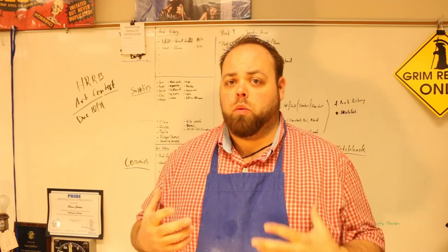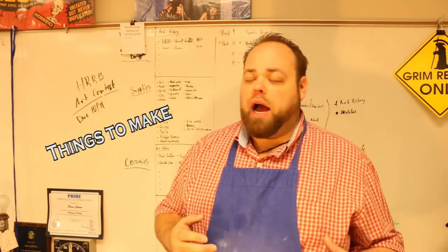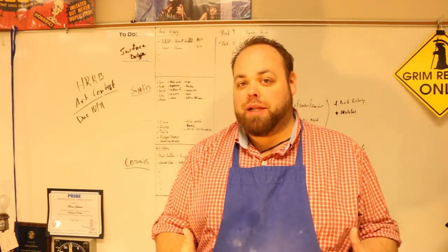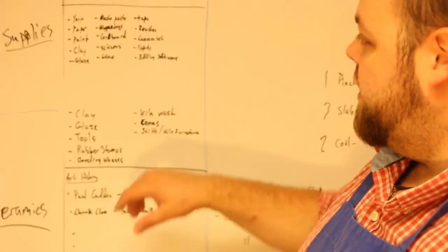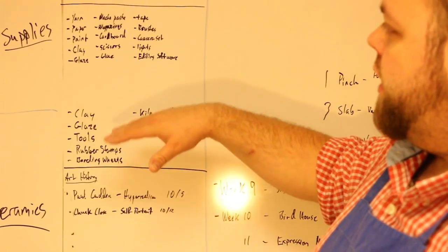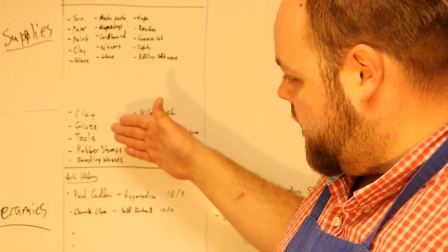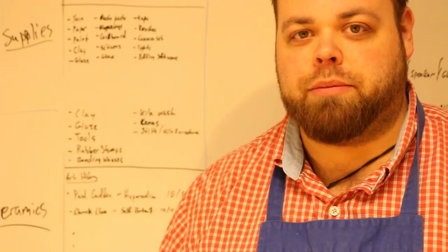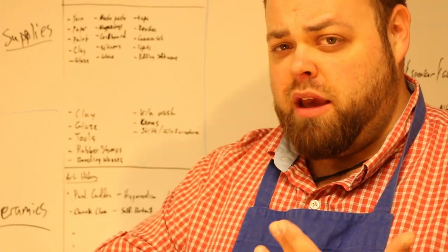Number one: we need to know what we're going to make. On my board I have my surface design class and my ceramics class, and the supplies I need for both. In the middle I've got two supply lists — I need yarn, paper, paint, clay, glaze, paper mache paste, rubber stamps. There's a lot of things that overlap, so I don't need to buy two sets of these things.